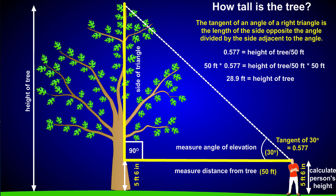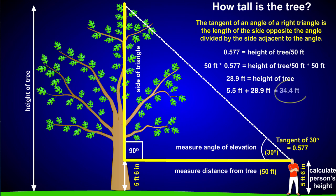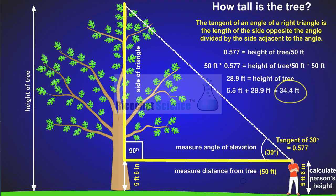But wait — you need to factor in your height. Just add your height, 5.5 feet, to get the total height of the tree. 5.5 plus 28.9 equals 34.4 feet.